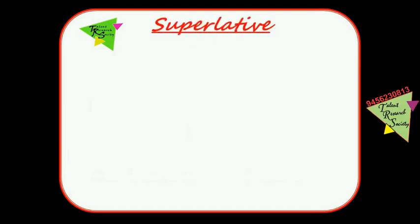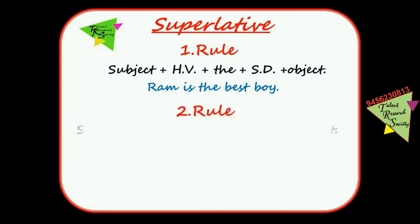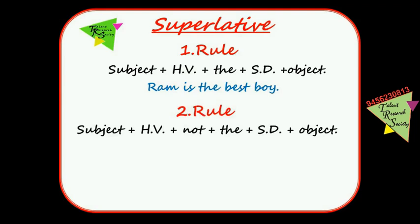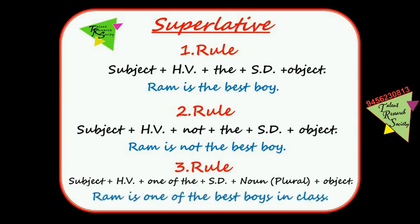Superlative Rule 1: Subject + helping word + the + superlative degree + object. Example: 'Ram is the best boy.' Rule 2: Subject + helping word + not + the + superlative degree + object. Example: 'Ram is not the best boy.' Rule 3: Subject + helping word + one of the + superlative degree + noun (plural) + object. Example: 'Ram is one of the best boys in class.'